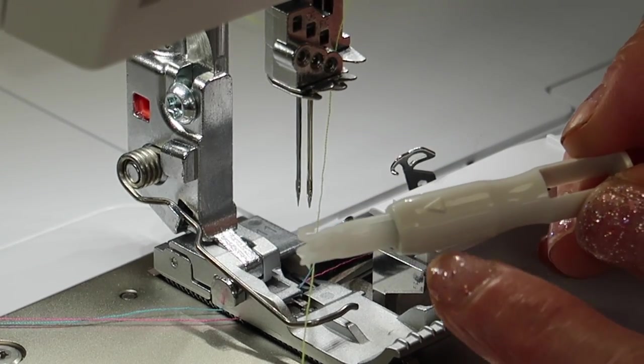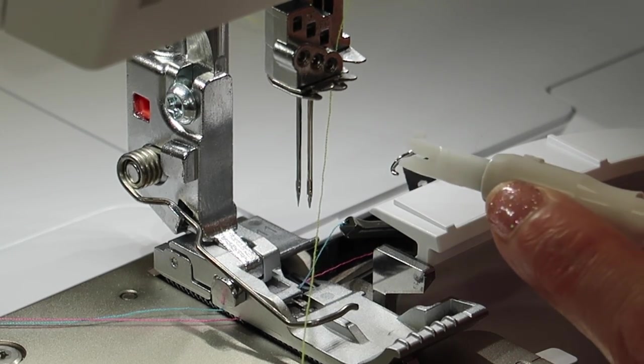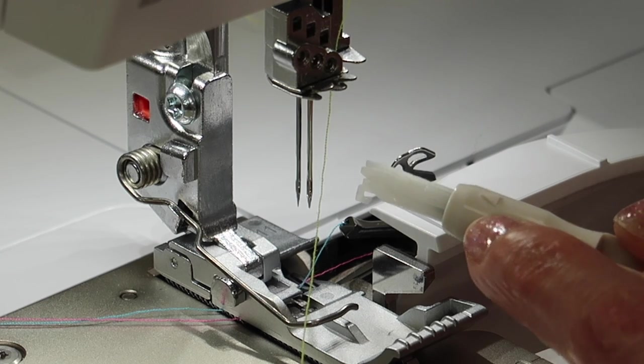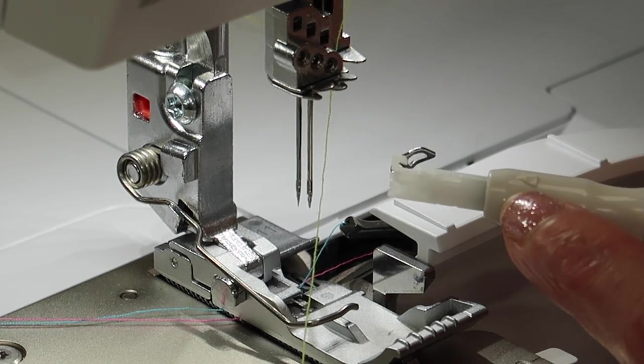Next, the needle threader has a mark on the top, an arrow, so that always needs to be on top. You can have it 180 degrees and there's another arrow. So one of those arrows facing up means you are holding it correctly.